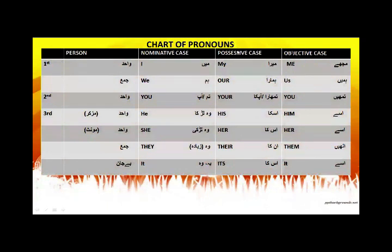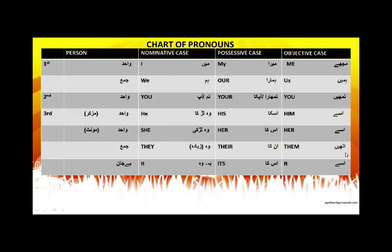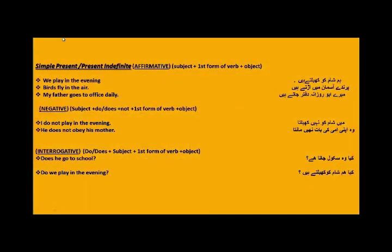Before that, here is a chart of pronouns. In nominative case: 'Main' becomes 'I,' 'Hum' becomes 'we,' 'Tum/Aap' becomes 'you,' 'Wo ladka' becomes 'he,' 'Wo ladki' becomes 'she.' For plural, 'Wo' becomes 'they,' and for lifeless objects 'Yeh/Wo' becomes 'it.' In possessive case: 'Mera' = my, 'Humara' = our, 'Tumhara/Aapka' = your, 'Uska' (masculine) = his, 'Uska' (feminine) = her, 'Unka' = their, 'Uska' (lifeless) = its. In objective case: 'Mujhe' = me, 'Hame' = us, 'Tumhe' = you, 'Usse' (masculine) = him, 'Usse' (feminine) = her, 'Unhe' (plural) = them, 'Usse' (lifeless) = it.